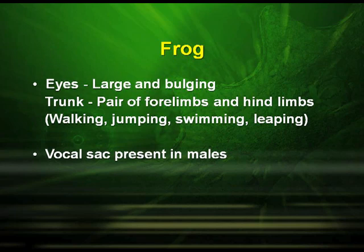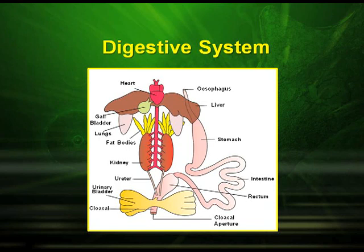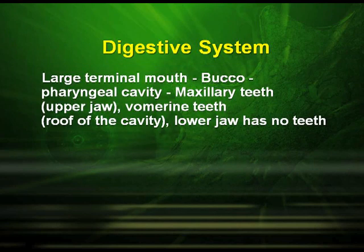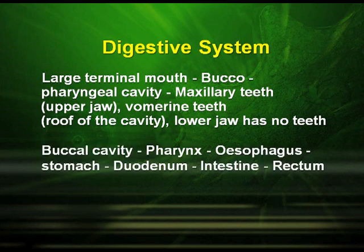The vocal sacs are present in the males. Regarding the digestive system of frog, they have a large terminal mouth which leads to the buccal pharyngeal cavity, which has maxillary teeth in the upper jaw. The vomerine teeth are at the roof of the cavity, whereas the lower jaw has no teeth. The buccal cavity leads to the pharynx, which goes to the esophagus, then the stomach, duodenum, intestine and cecum.